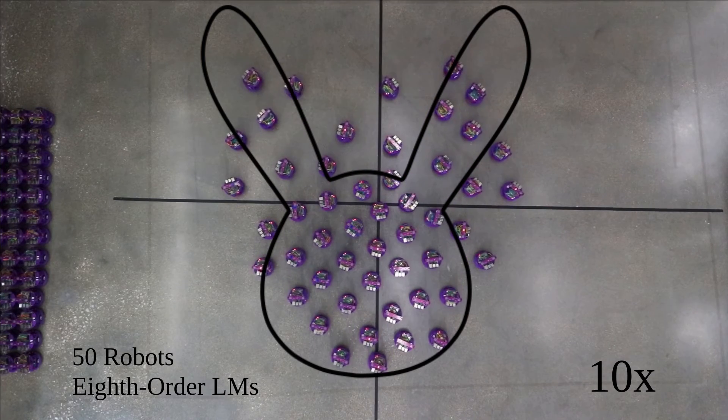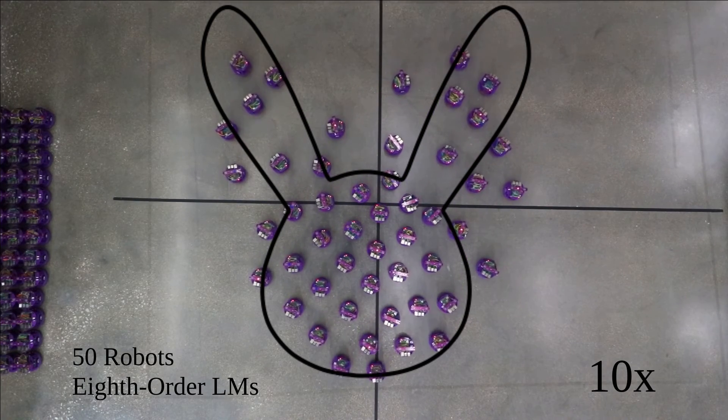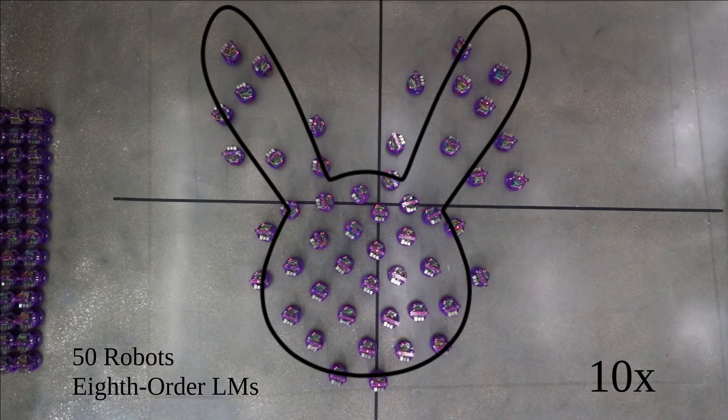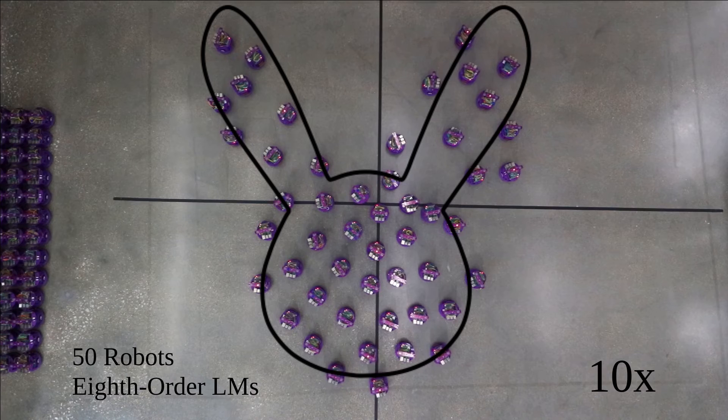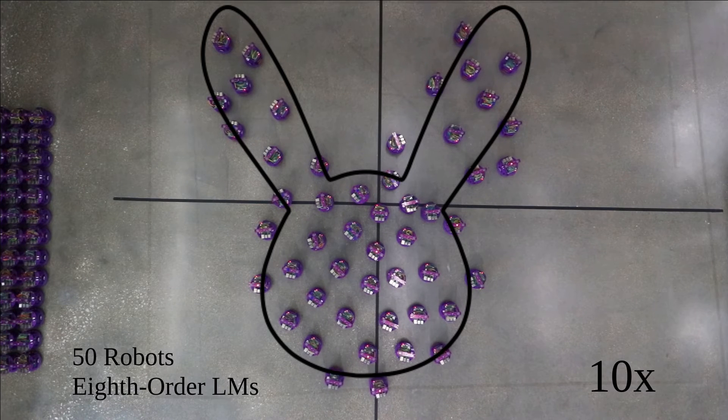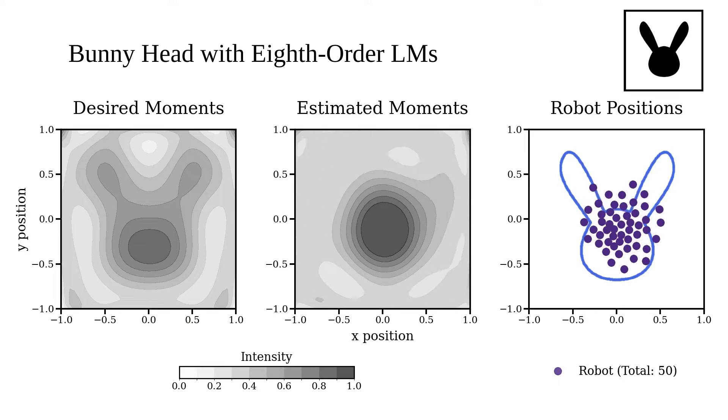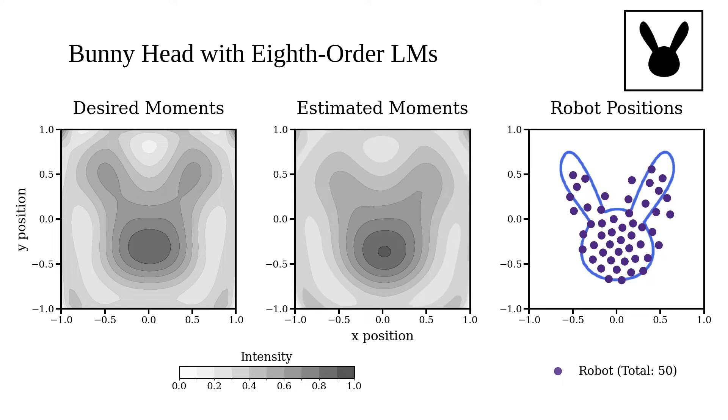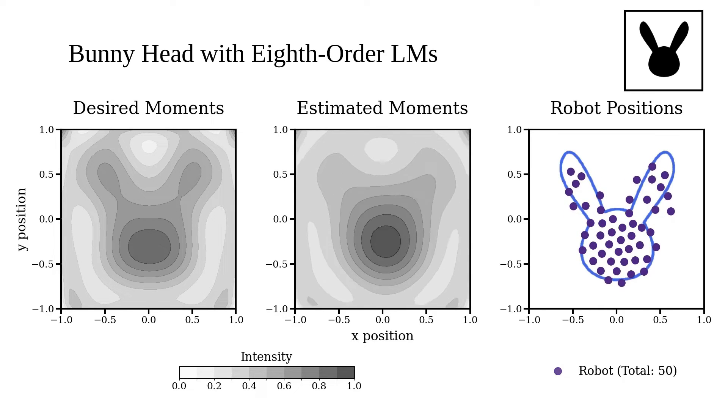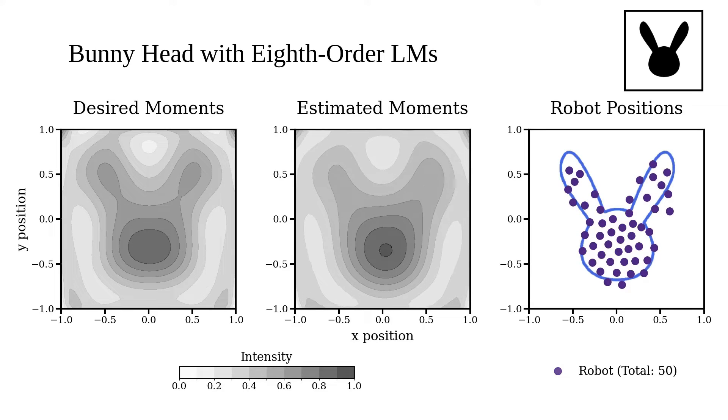Here is a video sped up 10 times of the robots forming the bunny head using 8th order Legendre moments. On the left is the image reconstruction from the desired Legendre moments. In the middle is the image reconstruction from one robot's estimated Legendre moments.